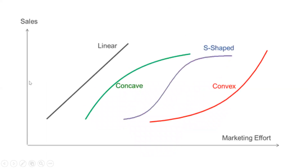Looking at the shape effect visually: the y-axis has sales and the x-axis has marketing effort. We can use a linear model, but it has its own problems. Therefore, instead of a linear curve we can try a concave-shaped or S-shaped curve, or further experiment with a convex-shaped curve. These are the three options: linear, S-shaped, or concave/convex.